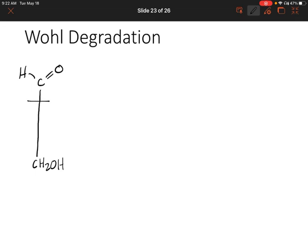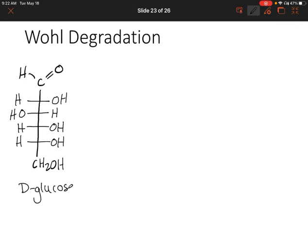Let's draw D-glucose again. You're probably going to have the structure of D-glucose memorized by the end of this. We're going to use a reaction that we've seen previously. We're going to convert that aldehyde group on the top into an oxime.